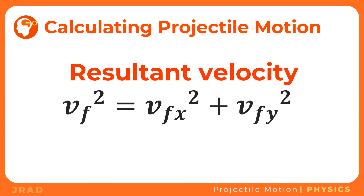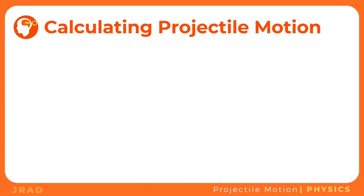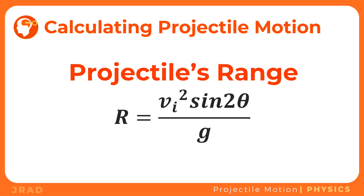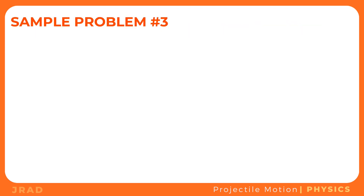Since velocity along the horizontal component is constant, the initial velocity equals the final velocity at any time interval, and the acceleration is still equal to zero. To solve for the range of a projectile launched at an angle, we use the formula R equals vi² times sine 2θ over g, where R is the range, vi is the initial velocity, θ is the angle of projection, and g is the acceleration due to gravity. This equation for range can only be used if the height where the projectile was released is the same as the height where it landed. Along the vertical component, the same free-fall equations still apply.